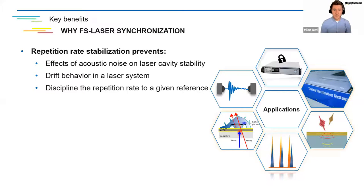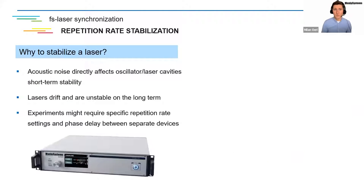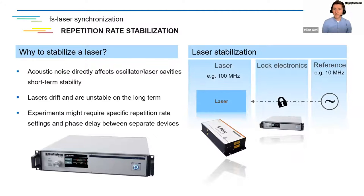Let's talk about why you actually need to synchronize femtosecond lasers. There are many impacts on such a system that can degrade your measurement. For instance, acoustic noise can have an impact on laser cavity stability. There can be drift of your laser system, which has a negative effect on your measurement. And there might be requirements where you want to force a repetition rate to a given reference. Among many different applications, we will talk about ultra-fast time domain spectroscopy, terahertz spectroscopy, imaging and microscopy applications, picosecond ultrasound, and timing distribution systems.